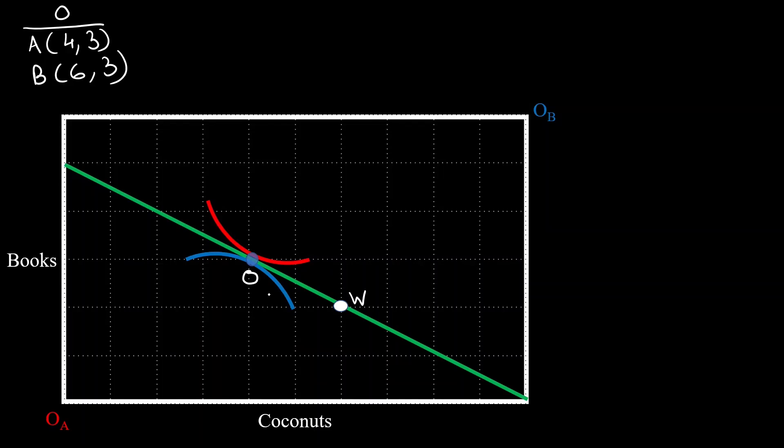We can check it for books as well. A initially has two books and now A wants three. From B's perspective, B initially has four and now wants only three. So B can easily sell her extra coconut to A. In this situation, the optimal for agent A and B is equal to the total number of goods available. We can check that. There are 10 coconuts available and A and B are exhausting all of them. Similarly, there are six books available inside the box and A and B are exhausting all of them. So this is in equilibrium.